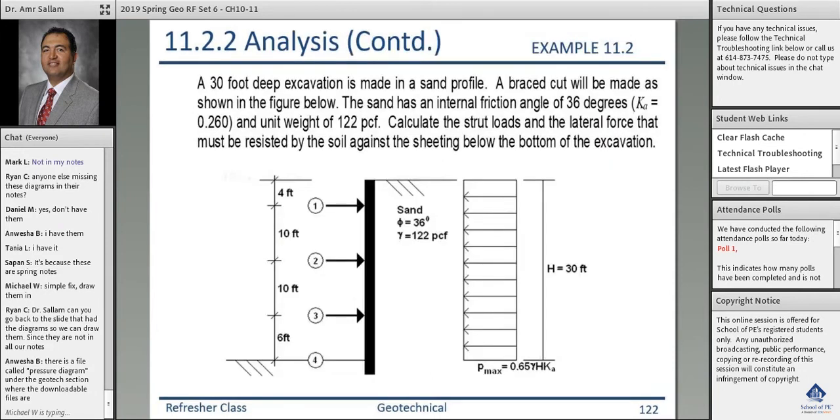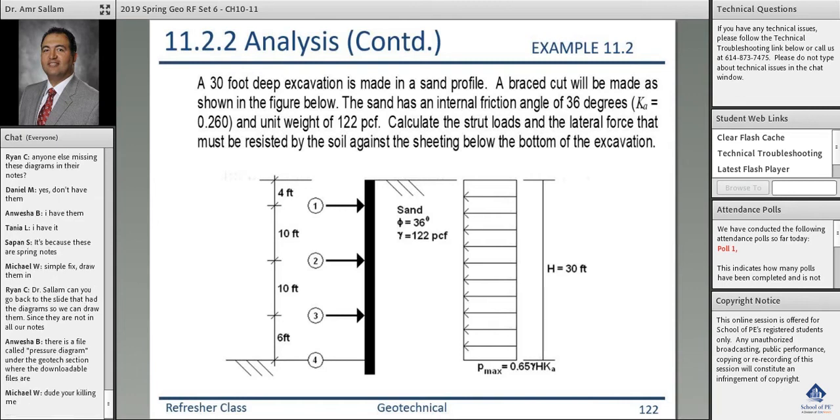Here's an example for you: 30 feet deep excavation is made in a sand profile. Braced cut will be made as shown in the figure. The sand has a friction angle of 36 degrees, the active coefficient is given, unit weight 122. Calculate the strut load and the lateral force that will be supported by the soil. So this sheet pile here went into the soil, see here, inside the soil, that means there is an action here.